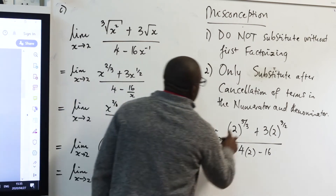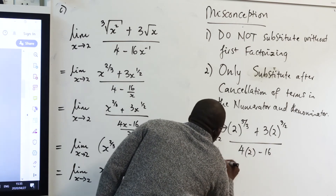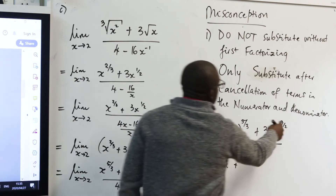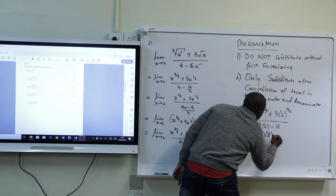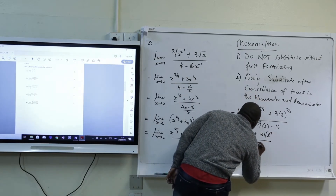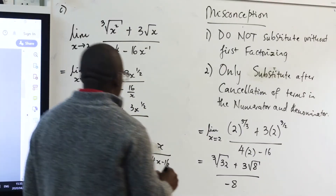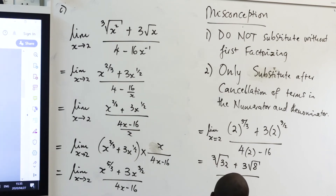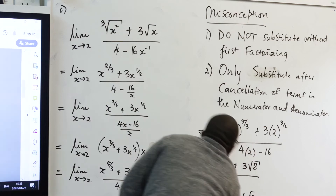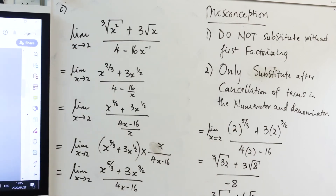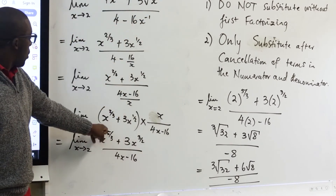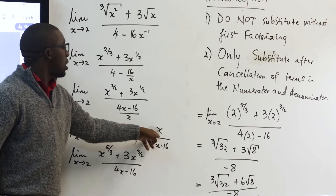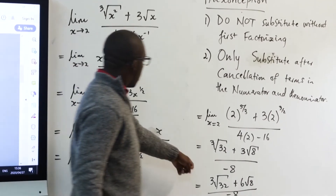This gives the cube root of 32 plus 3 times the square root of 8, all over negative 8. That is the final answer — left in that form. This one was more intense: we had to use LCD and laws of exponents, then demonstrate the distributive law, and thereafter substitute to get the answer.